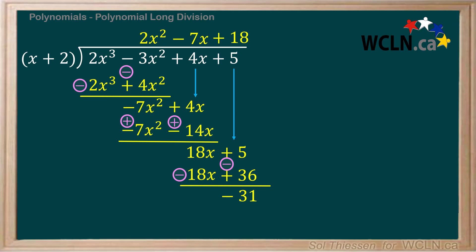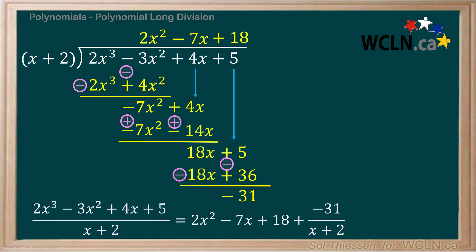We've now got to the point where we can't multiply x by anything to get what remains of the dividend, negative 31. In other words, the degree of what remains is less than that of the divisor. This means the division is complete and negative 31 is our remainder. Another cue that the division is complete is that the last term we added to our quotient was a constant term, that positive 18. To summarize: we have taken 2x cubed minus 3x squared plus 4x plus 5, divided by x plus 2, to give a quotient of 2x squared minus 7x plus 18, with a remainder of negative 31 still divided by x plus 2.